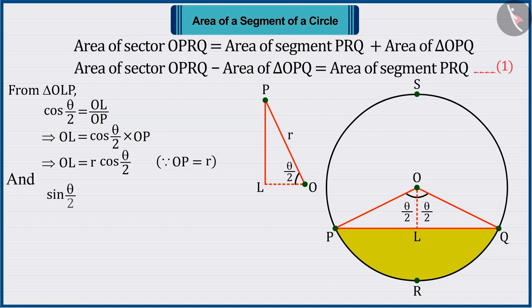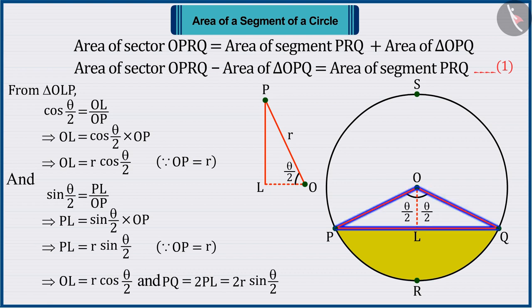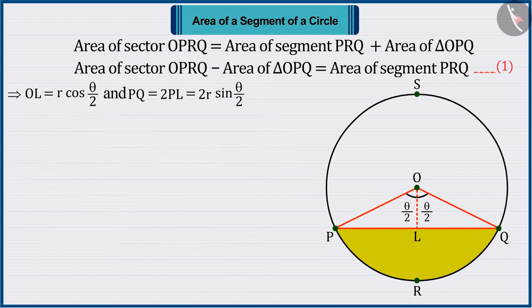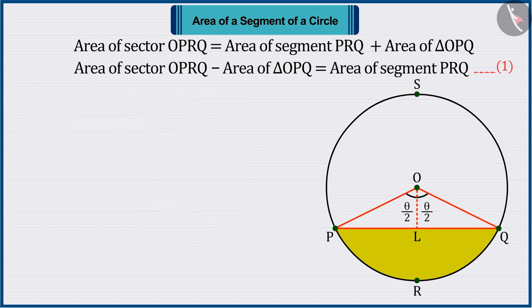Similarly, sin theta upon 2 will be equal to PL upon OP, from which the value of PL is found as R sin theta upon 2. We know that in triangle OPQ, the value of base PQ is twice that of PL. Hence, the area of triangle OPQ is R square multiplied by sin theta upon 2 cos theta upon 2.